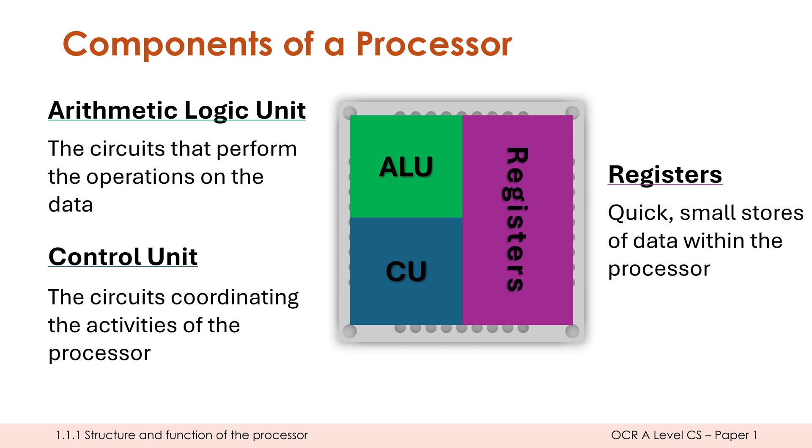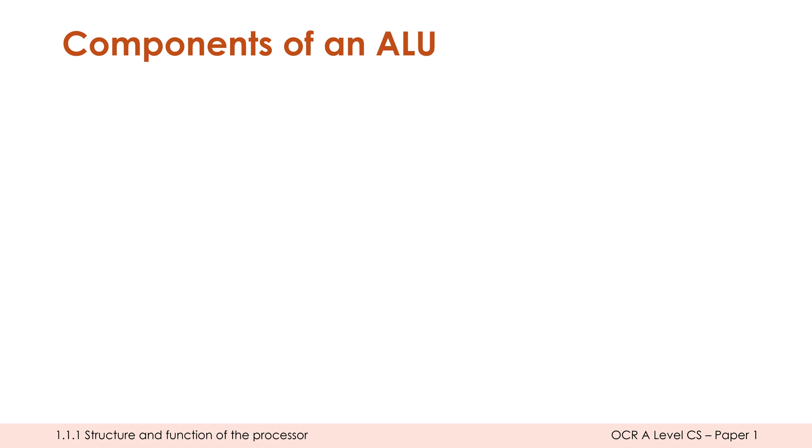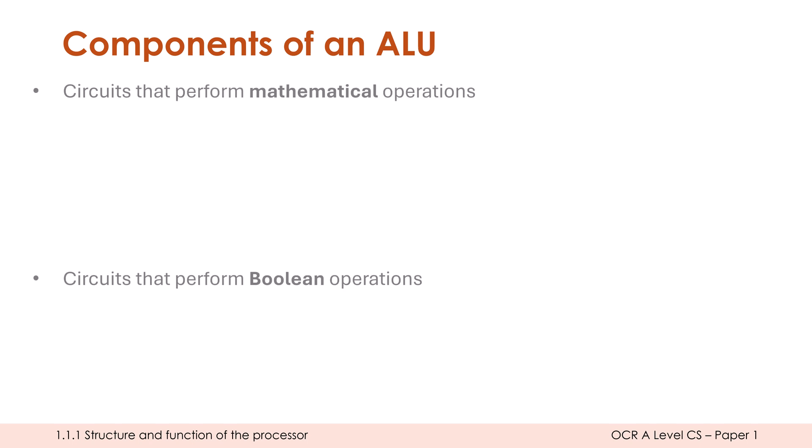We'll dig into some particular registers in a future video. Let's finish by talking a bit more about the ALU, which is where most of the action happens — it's where most of our instructions actually get carried out. The two key areas within an ALU are arithmetic and logic. We have circuits which perform maths operations and circuits which perform logical operations — you can also use the word 'boolean'. Boolean will always give us either a true or false response: true being the same as binary one, and false being the same as binary zero.